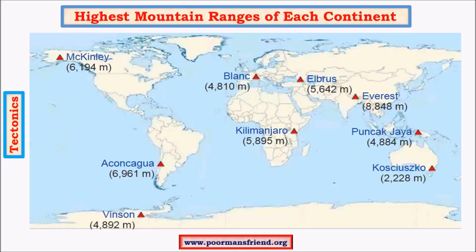Here is one very important map to remember. Mount Aconcagua is the highest peak in the Andes; it is on the border of Argentina and Chile. Comparing heights, one more important fact is that the highest volcanic mountain is also present in the Andes - it is called Ojos del Salado, which is part of the Andes mountain system and is very close to Aconcagua.